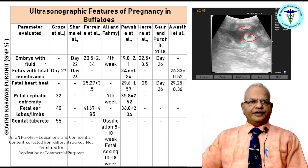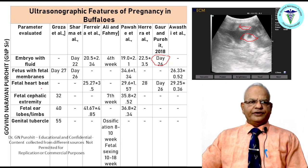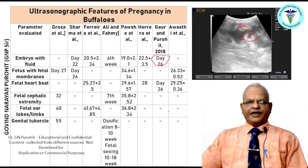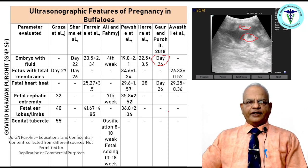Studies report embryo with fluid visible at day 22, day 20.5 ± 2.34, or around day 19 to 22.5 days depending on the study. In our own study with Surti buffaloes, the embryo with fluid was visible at around day 26. Farmers must be encouraged to report to the veterinarian for pregnancy diagnosis within two to three months of insemination or natural mating to avoid rearing non-pregnant buffaloes for a long time.